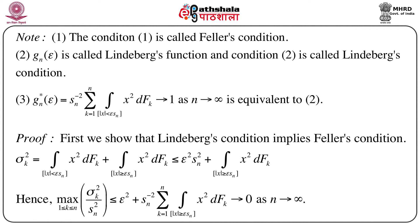If we replace |x| by εs_n in the first integral, it is less than or equal to ε²s_n². Considering σ_k²/s_n² and taking the maximum over k between 1 and n, we get max_k σ_k²/s_n² ≤ ε² + s_n^{-2} Σ_{k=1}^{n} ∫_{|x| ≥ εs_n} x² dF_k. The left side is Feller's condition and the second term on the right is Lindeberg's condition. Since Lindeberg's condition holds, the second term goes to 0 as n → ∞, and since ε is arbitrary, Feller's condition is satisfied.